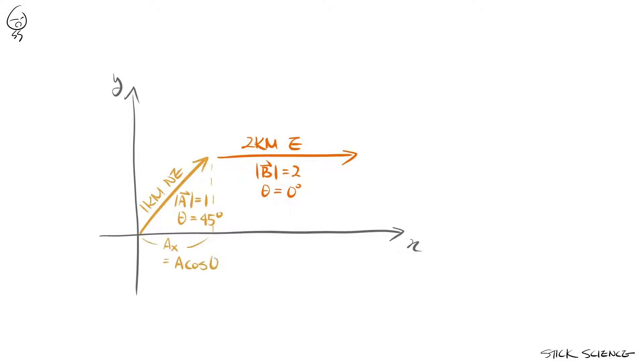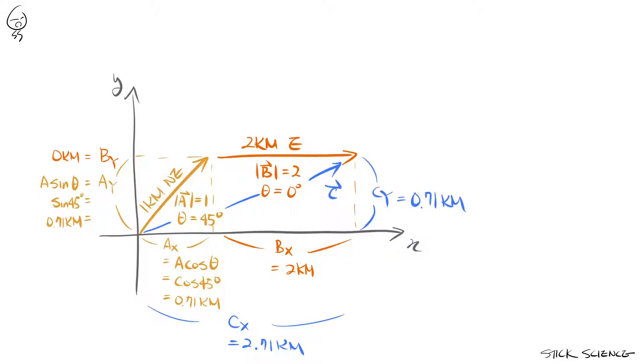Since ax is equal to a cosine theta and ay is equal to a sine theta, the components of vector a are 0.71 kilometers and 0.71 kilometers. Using the same method, the components of vector b are 2 kilometers and 0 kilometers. Add these components and the resultant sum vector c will have the components 2.71 kilometers and 0.71 kilometers.